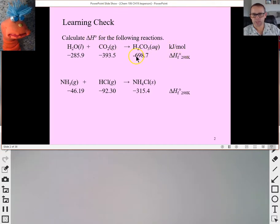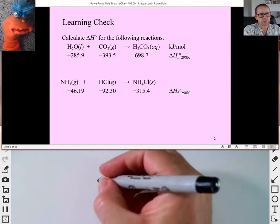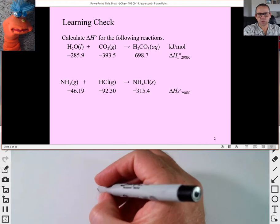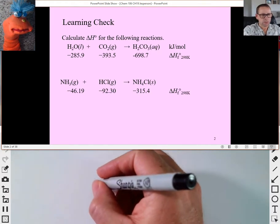So if I took the -698.7, that's the delta H of formation there, the delta H of formation for this chemical. In other words, that's a way of saying, well, when we're talking about a delta H of formation or a formation reaction, that's the delta H formation.